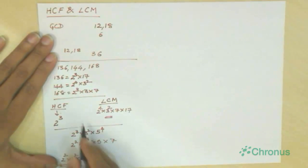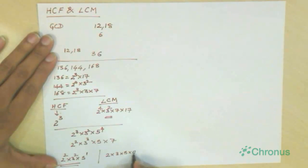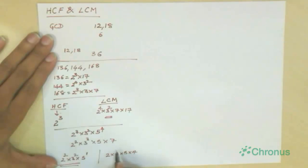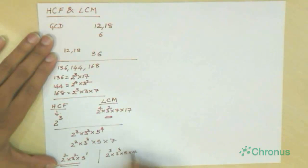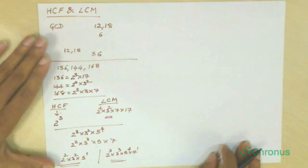Coming to the LCM, take all the prime factors: 2, 3, 5, and 7. For LCM, we take the highest power of each: the highest power of 2 is 3, the highest power of 3 is 3, the highest power of 5 is 4, and the highest power of 7 is 1. So the LCM is 2 cubed into 3 cubed into 5 to the power 4 into 7.